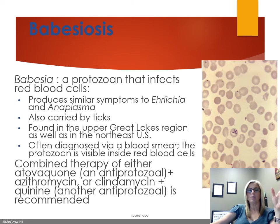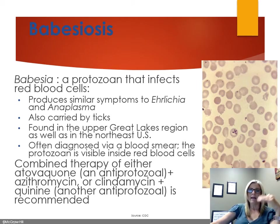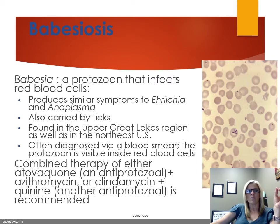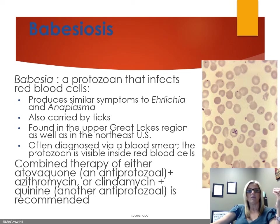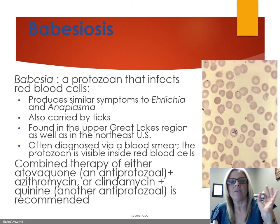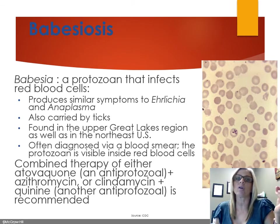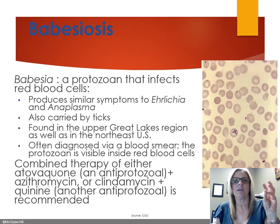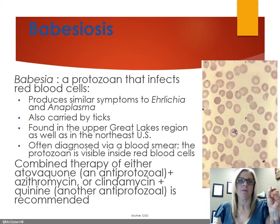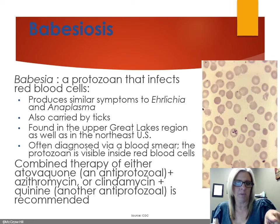Babesiosis is caused by a protozoan — not a bacterium — that affects red blood cells. It has similar symptoms to ehrlichiosis and anaplasmosis and is also carried by ticks. It is found in the Northeastern United States and Great Lakes region. Diagnosis is by blood smear — you can see the protozoa inside the red blood cells. Treatment is a combination antiprotozoal therapy: atovaquone plus erythromycin or clindamycin and quinine. Note: this is mislabeled as bacteria in some charts — it is actually a protozoan.